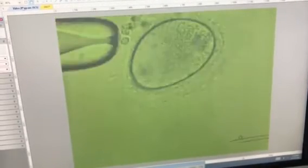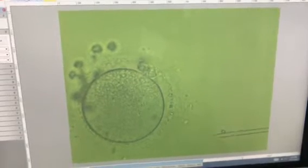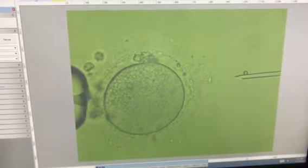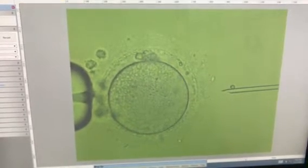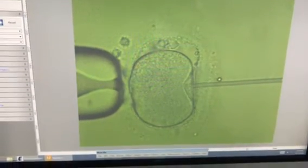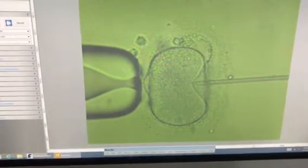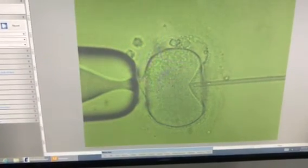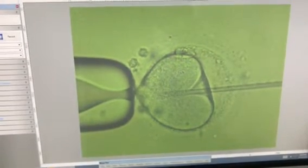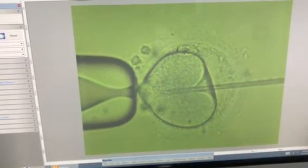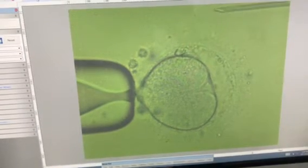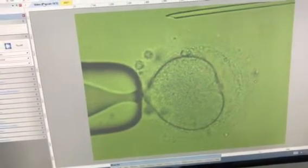This oocyte twice failed. This oocyte has a little bit bigger perivitelline space and slightly granular, and the ooplasm is good. I can feel the ooplasmic maturity is also perfect, slightly fragmented polar body.